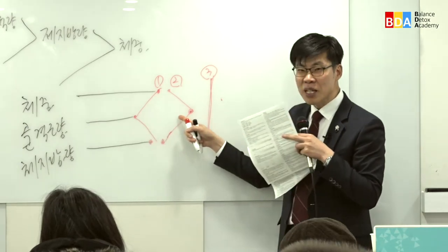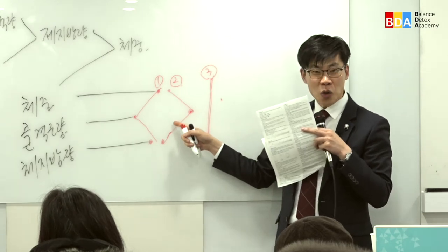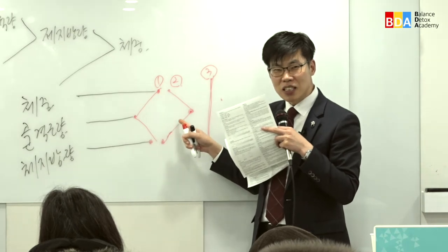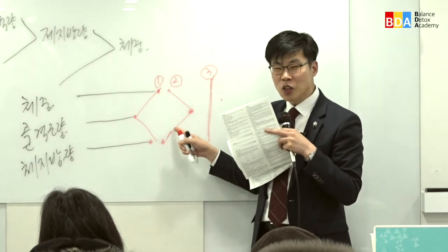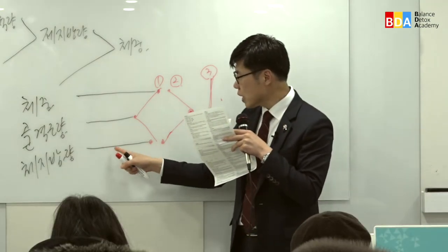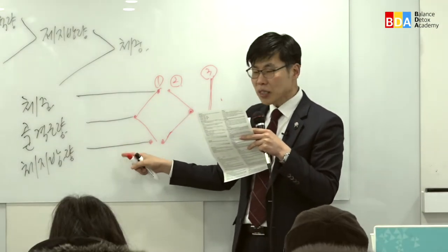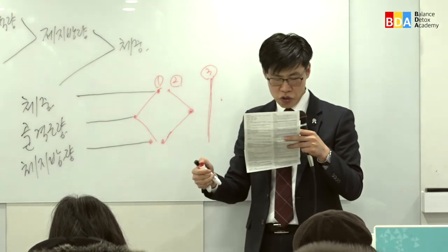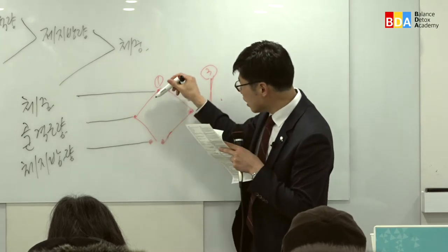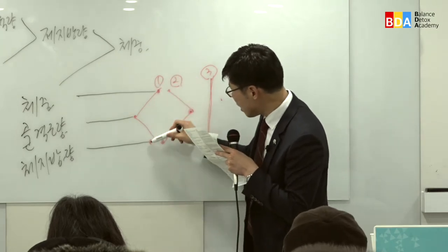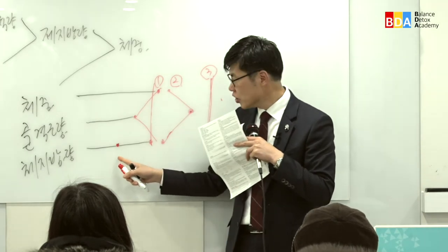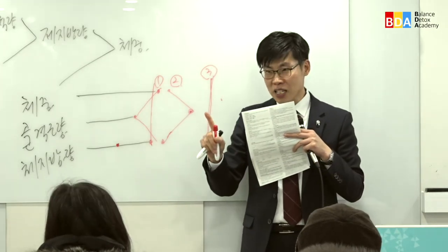골격근량이 높은 사람이 기초대사량도 높습니다. 뼈에 붙어있는 근육이 많은 것이 좋고, 지방은 적은 것이 좋습니다. 그런데 여자분들 체지방량이 표준 이하로 내려가면 지방량이 너무 적어서 문제입니다. 정상 레벨보다 더 적게 나왔다고 해서 좋은 것만은 아닙니다.